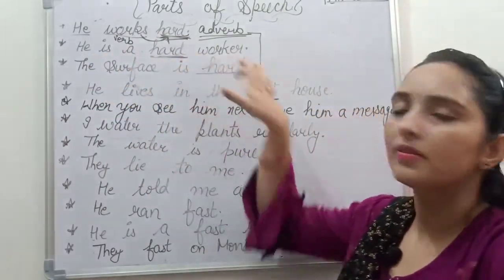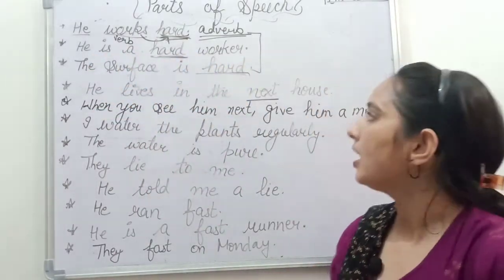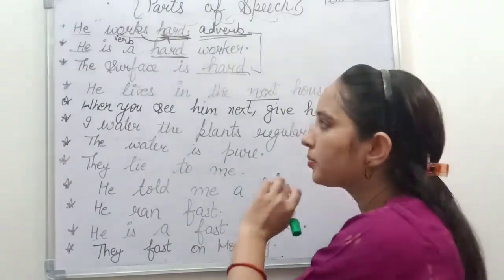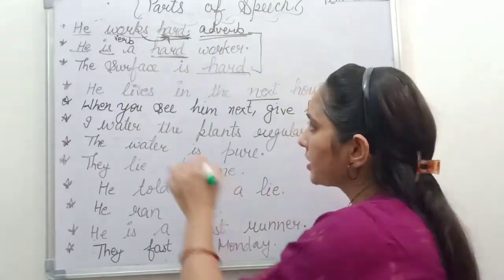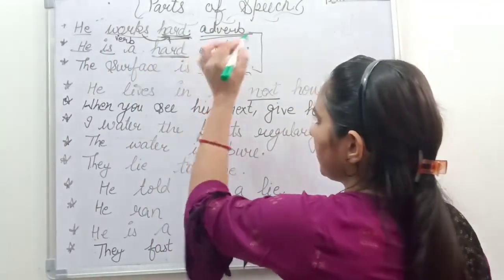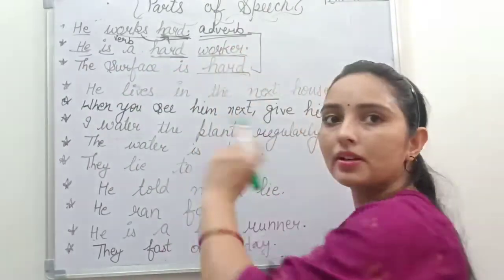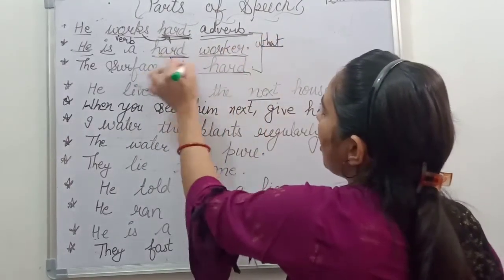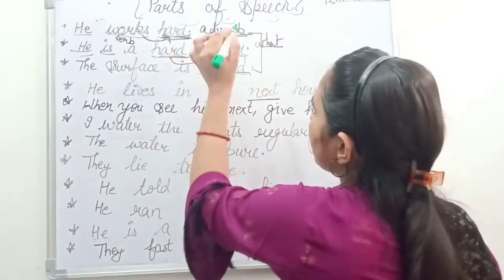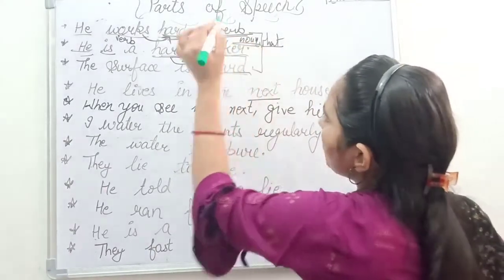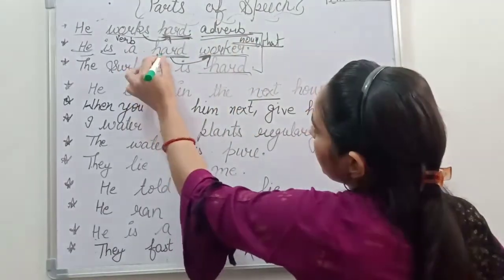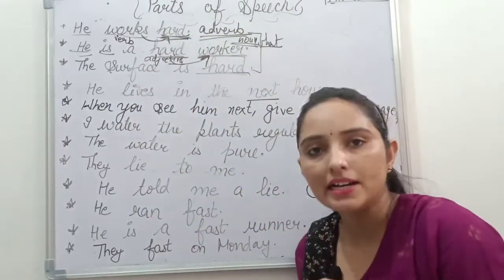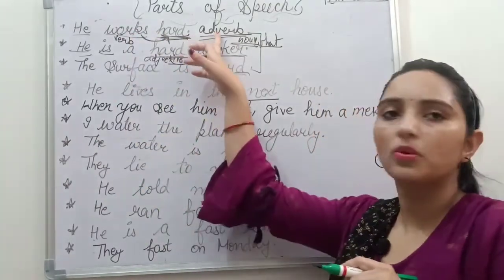Second example: 'He is a hard worker.' Let's see who is working — 'he' is the subject. What is the main word? 'Hard worker.' 'Worker' means one who works — it is a noun. How is the worker? What type? Hard. So 'hard' is specifying the noun 'worker.' In the second sentence, 'hard' plays the role of adjective. Previously in the first sentence, the role was adverb.